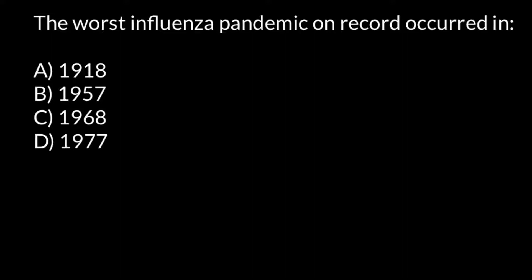The first choice, answer A, is 1918 — this is when the worst pandemic, which we know as the Spanish flu, occurred. Scientists estimate it cost about 20 to 50 million lives, which is more than the casualties during World War One. One of the reasons why World War One finished was also because of this influenza pandemic.